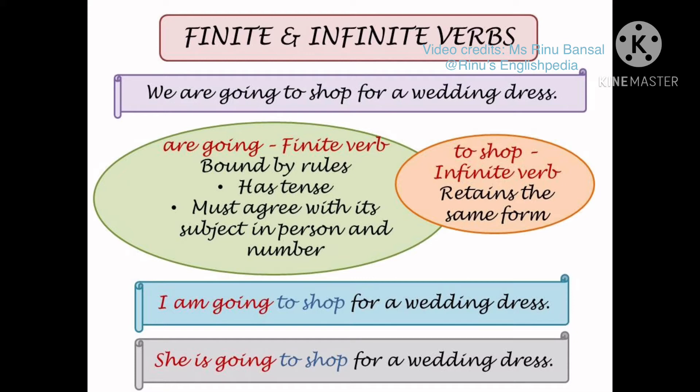This brings us to our next topic: finite and infinite verbs. Consider the example: we are going to shop for a wedding dress. This sentence has two verbs — are going and to shop. Are going is the finite verb and to shop is the infinite verb. Are going is bound by rules — it has a tense and must agree with the subject in person and number.